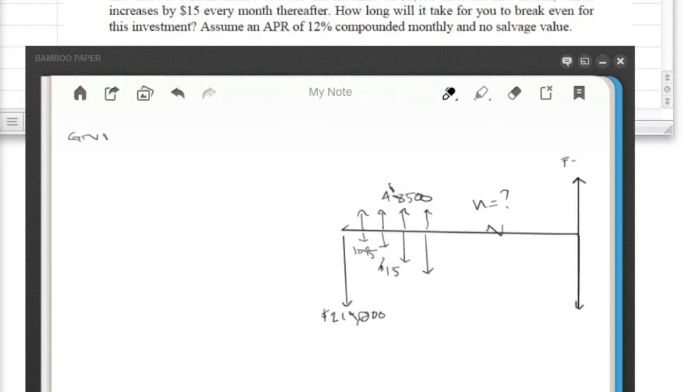Let's write down what our given values are. Okay. We have the first payment here of $214,000. We have an A value of $8,500 coming in per month. We have an A prime that we'll put down here for our maintenance cost of $1,095 per month.